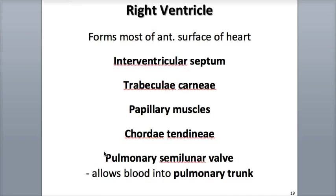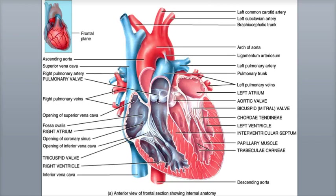As blood flows out of the right ventricle, it goes through the pulmonary valve, also called the pulmonary semilunar valve, and makes its way into the pulmonary trunk, a large artery that branches into the right and left pulmonary arteries. These pulmonary arteries are carrying deoxygenated blood to the lungs. Remember that arteries carry blood away from the heart.